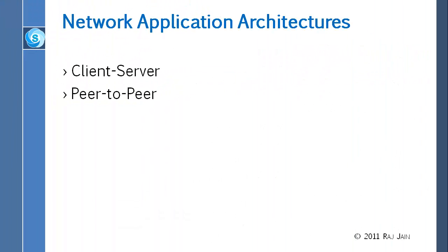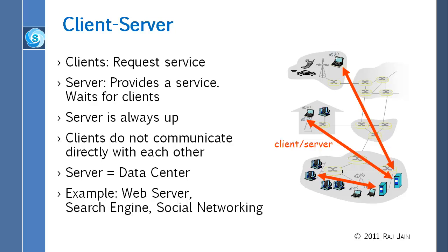Applications could be two types: either client-to-server or peer-to-peer. Client-to-server is where there are few servers and all the clients reach to them. When you go to Amazon or any web page, you are using client-to-server, because there is a web page server and you are a web page client. This was the common architecture until about 10 or 15 years ago when P2P started. Web servers, search engines like Google, social networking like Facebook — these are all client-server applications.